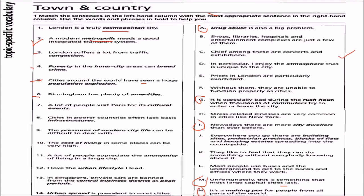Six: Birmingham has plenty of amenities. We match it with B — shops, libraries, hospitals, and entertainment complexes are just a few of them. So: amenities.